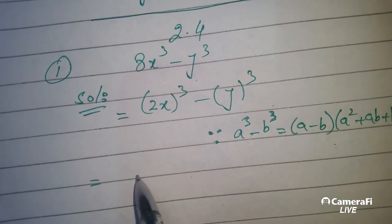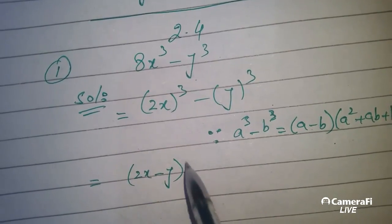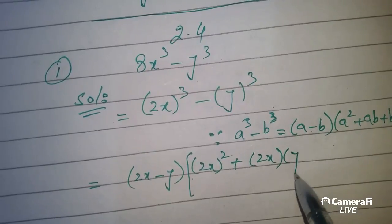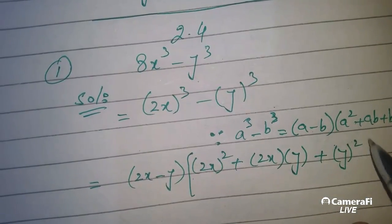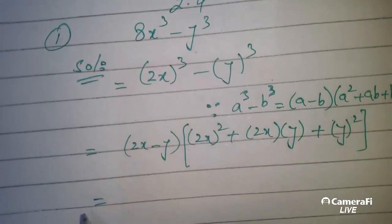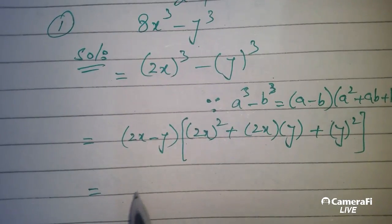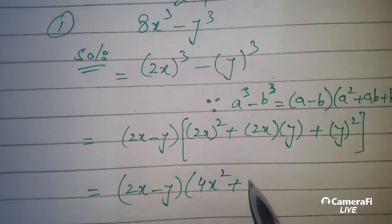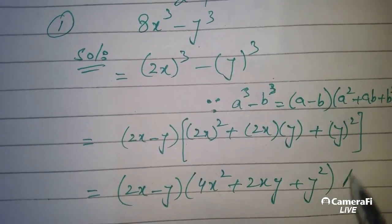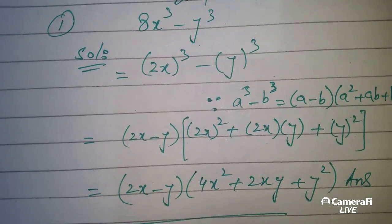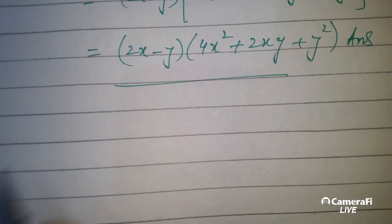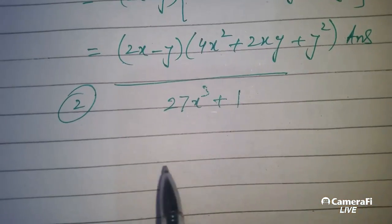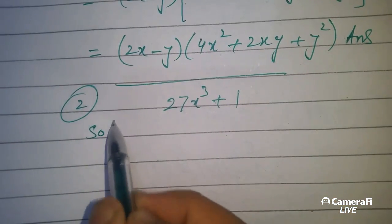And we apply this here: first term minus second term, so the first term squared plus first term into second term plus second term squared. This is the second term squared.